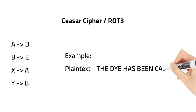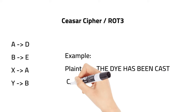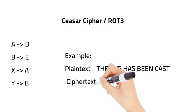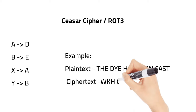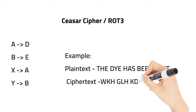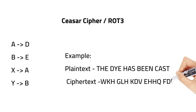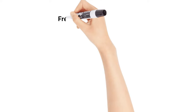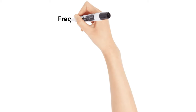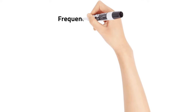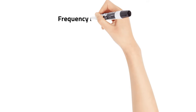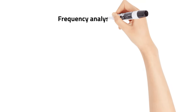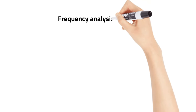To decrypt the message, you simply shift each letter three places to the left. The Caesar cipher is easy to use, but it is also easy to crack.